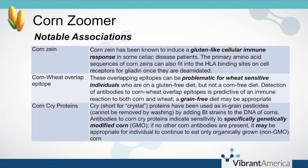Corn cry protein is the only marker on the corn zoomer that would be found in GMO corn but not organic corn. Everything else on the corn zoomer — antibodies to those proteins would indicate that all corn needs to be eliminated. So if an individual has only antibodies to corn cry proteins, eating organic corn would probably be okay. However, any other marker on the corn zoomer being elevated would warrant total corn elimination, whether it's organic or not.